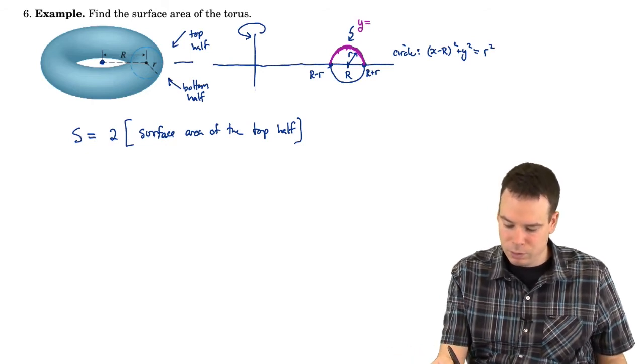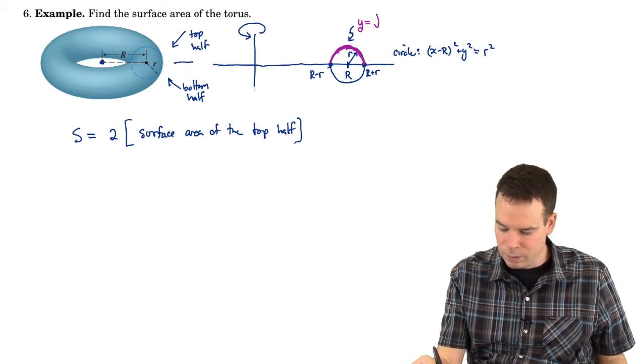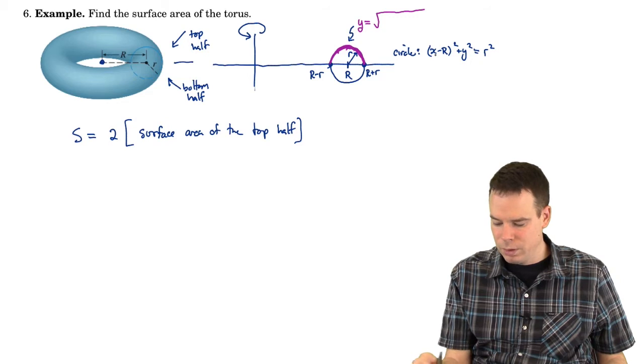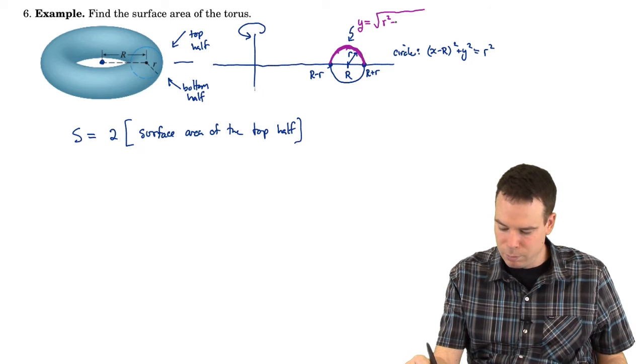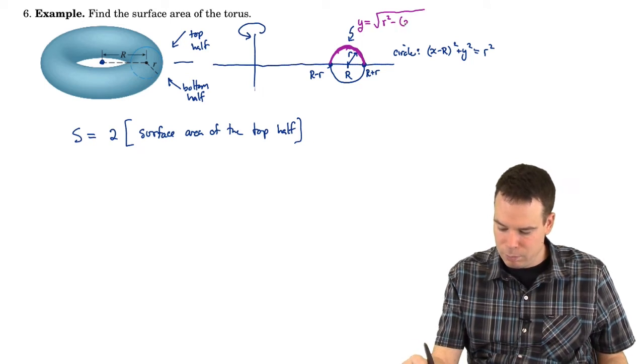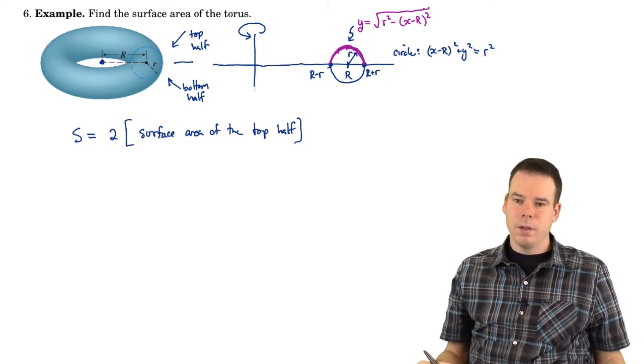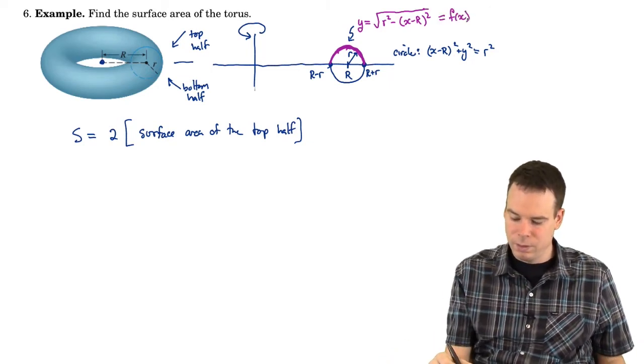So the upper semicircle is obtained by taking this expression and solving for y and taking the positive root. Positive root is going to give me the upper half, negative is the bottom half. I want the upper half. So this is going to be √(r² - (x - R)²). There's our function. That's our f(x). That's the thing we're revolving.